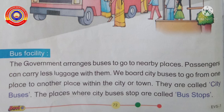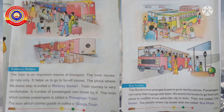Bus Facility. The government arranges buses to go to nearby places. Passengers can carry less luggage with them. We board city buses to go from one place to another place within the city or town — they are called city buses. The places where city buses stop are called bus stops.